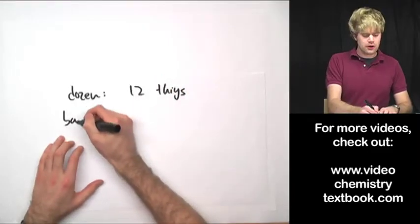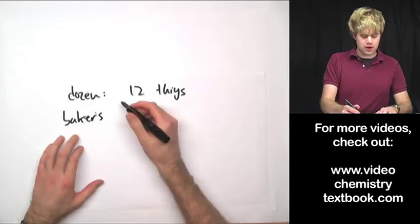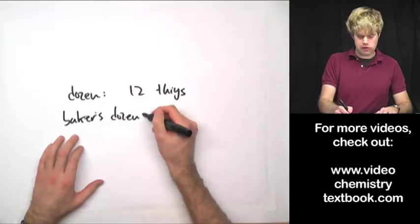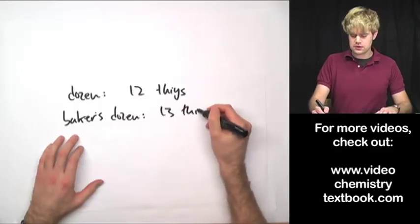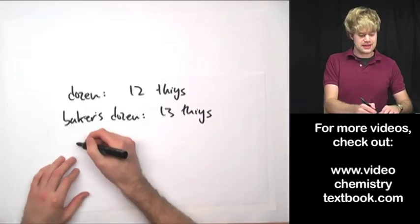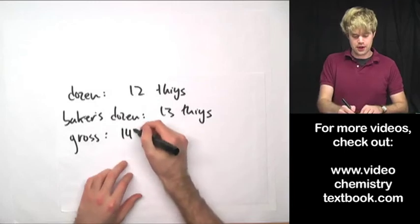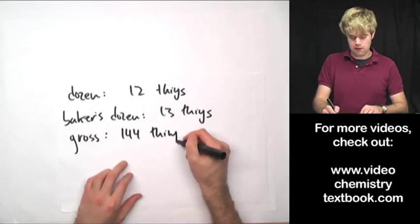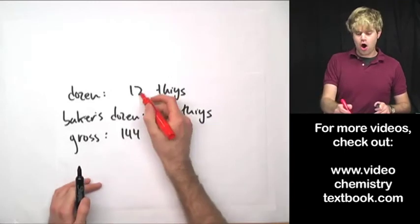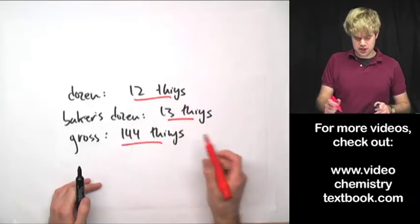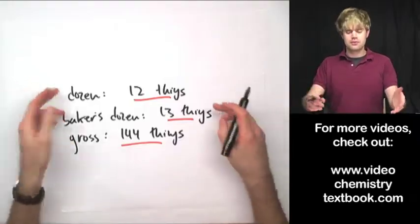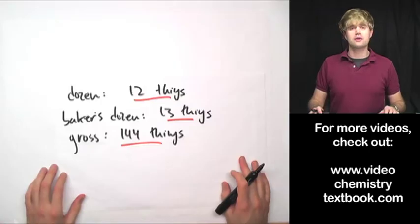Or maybe you're familiar with what we call a baker's dozen, which is 13 things, or the idea of a gross, which is a dozen dozen, so it's 144 things. In other words, all of these things—dozen, baker's dozen, gross—are just numbers that we use to count things.